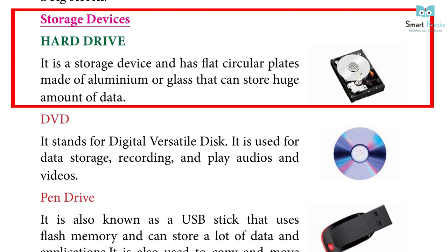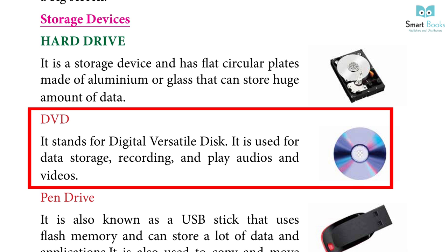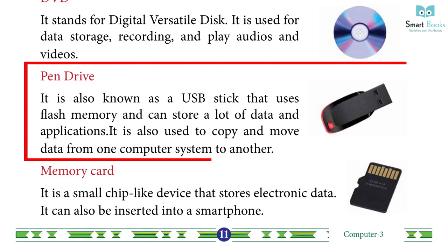Storage Devices. Hard disk: It is a storage device with flat circular plates made of aluminum or glass that can store a huge amount of data. DVD — Digital Versatile Disk: It is used for data storage, recording, and playing audios and videos. Pen drive: Also known as a USB stick, it uses flash memory and can store a large amount of data and applications. It is also used to copy and move data from one computer to another.